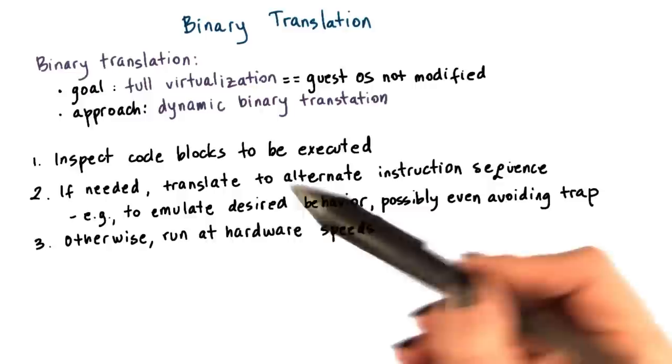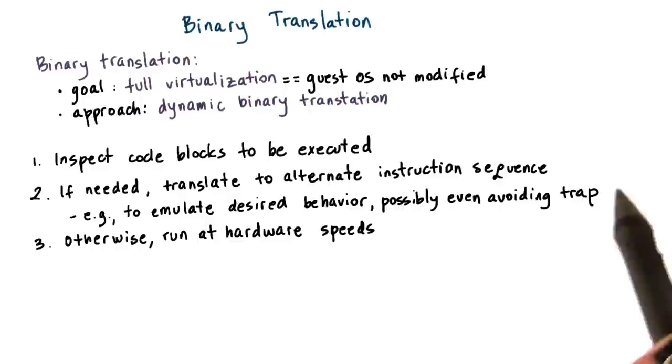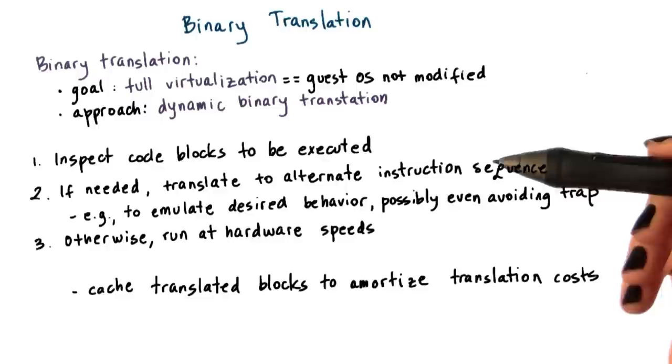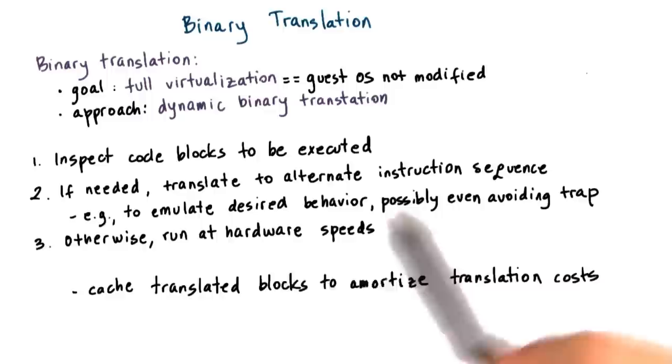Binary translation adds overheads, and a number of mechanisms are incorporated, specifically in the VMware solutions, to improve the efficiency of the process. These include mechanisms such as caching code fragments that correspond to the translated basic blocks so that the translation process can be avoided in the future.